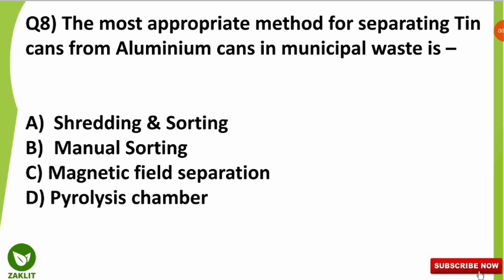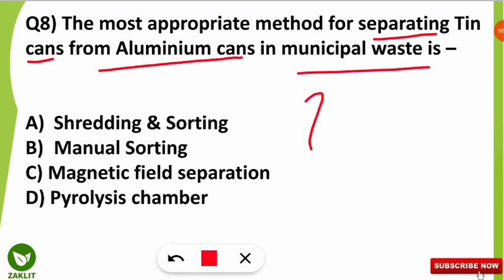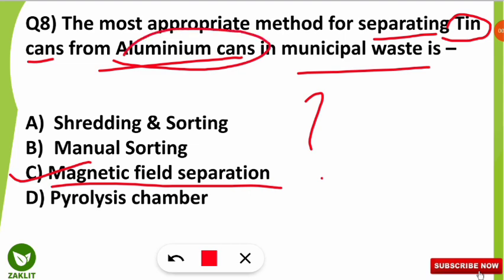The eighth question was: the most appropriate method for separating tin cans from aluminium cans in municipal waste is which process? The correct answer is the magnetic field separation technique, in which tin has greater interaction with the magnetic field compared to aluminium cans, so they can be easily separated.